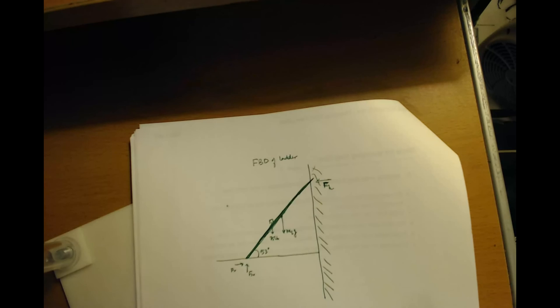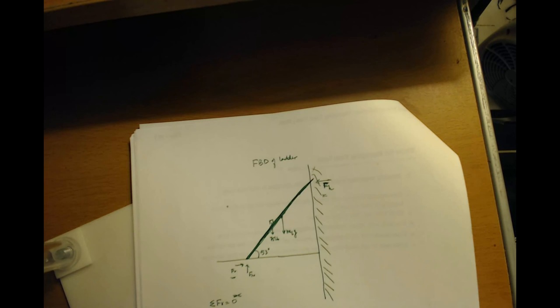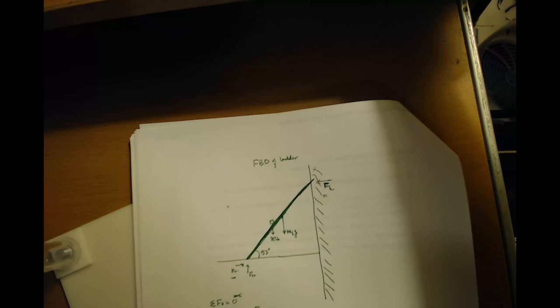So immediately when you see this, you want to analyze what are the forces in the x direction? What are the forces in the y direction? And immediately I see that the forces in the x direction, there are just two. There's fr. So if I use the formula sum of all forces in x equals zero. Why is it equal to zero? It's usually equal to mass times acceleration, but it's zero because the ladder isn't moving. It's static equilibrium. So fr is positive, minus fh would be zero. So fr equals fh.